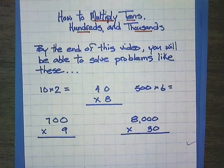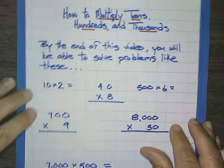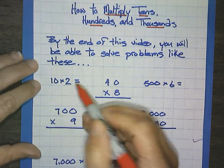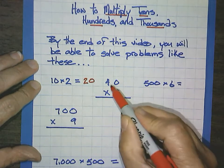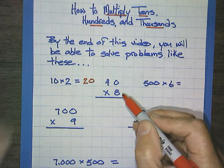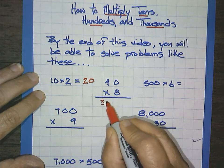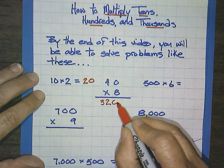By the end of this video, you will be able to solve problems like the ones below. I'll just jump into it. 10 times 2, 20. 40 times 8, well, 4 times 8 is 32, and there's one zero, so it would be 320.